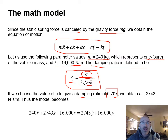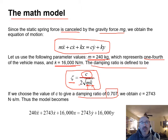Plugging in the damping ratio of 0.707, m = 240, and k = 16,000, we solve for c and find that c equals 2743 N·s/m.